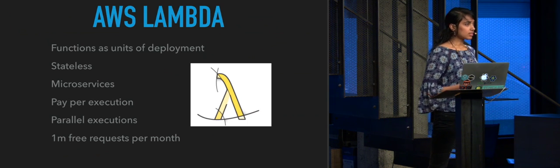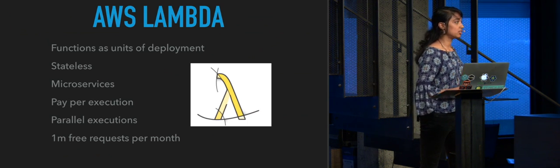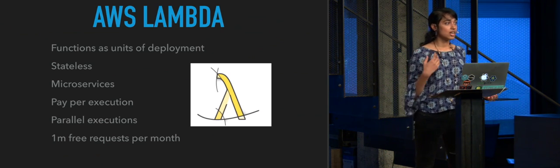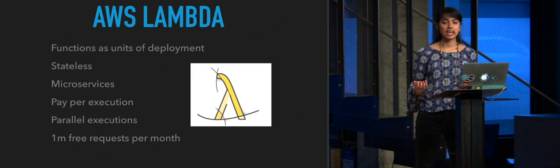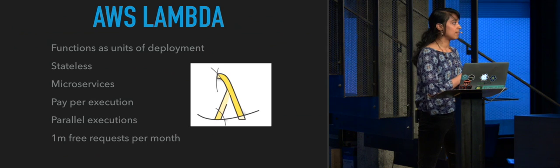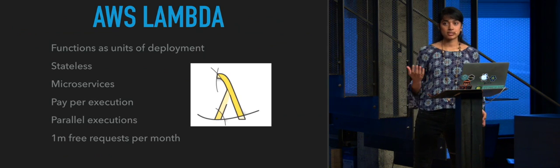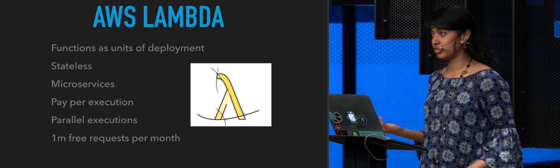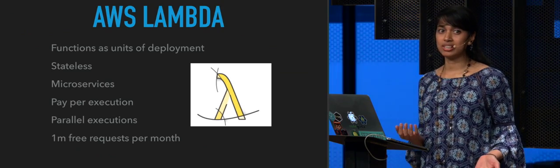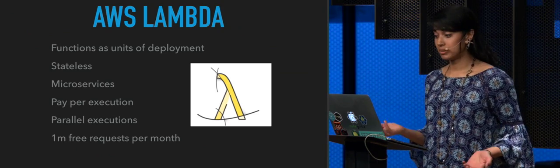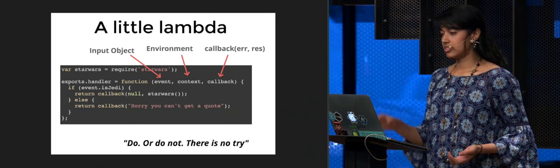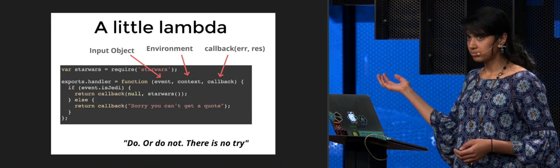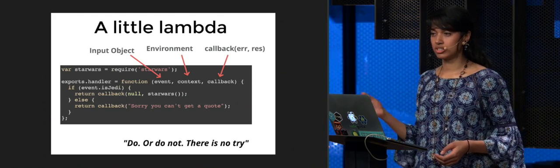AWS Lambda enables you to use functions as units of deployment. Individual functions can be deployed as Lambda functions and triggered by events, which enables a microservices architecture to be realized in the cloud. AWS in particular have made this really appealing by having a pay-per-execution model and a really generous free tier, which makes Lambda really easy to access and very cheap to play with. This is just an example of a Lambda function — the important things to notice are how it can be invoked with an event, a context, and a callback.